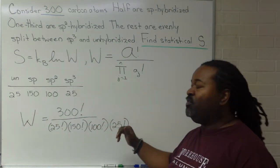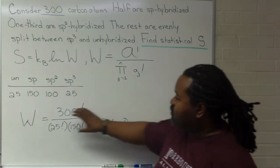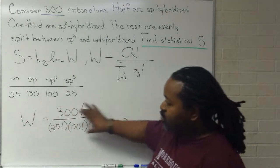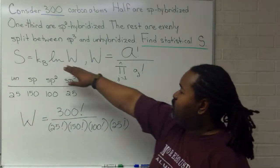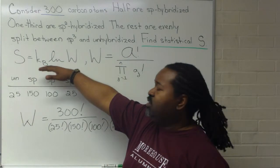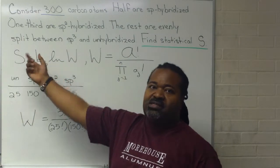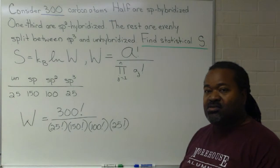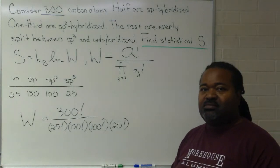We may pull a few tricks to simplify it, but ultimately, once we have this number for W, we can plug in for our natural log of W, multiply that by our constant, and that will give us a value for the statistical entropy of our system. Thank you.